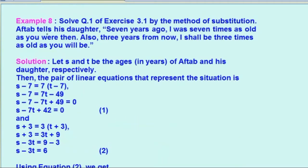Now let's come to example eight. Solve question one of exercise 3.1 by method of substitution: Aftab tells his daughter, seven years ago I was seven times as old as you were then; also three years from now I shall be three times as old as you will be. तो यह Aftab का था हमने part one में इसको solve किया था. तो यहाँ पर हमारे equations बनते हैं. Aftab क्या बोल रहा है? Seven years ago, मतलब S minus 7.